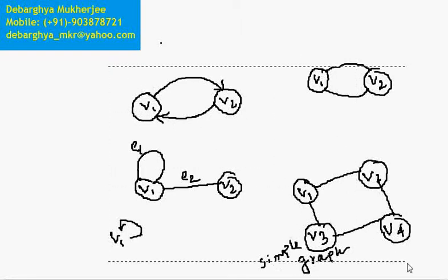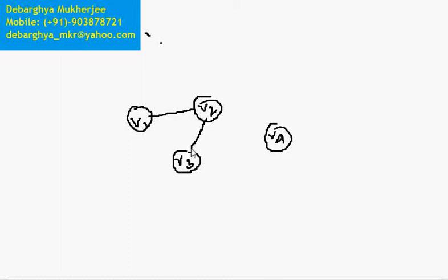Next, consider a graph with vertices V1, V2, V3, and V4, where V4 is not physically connected to V1, V2, or V3. This is called an isolated vertex. If any vertex is not connected with any other vertex, then that vertex is called an isolated vertex.